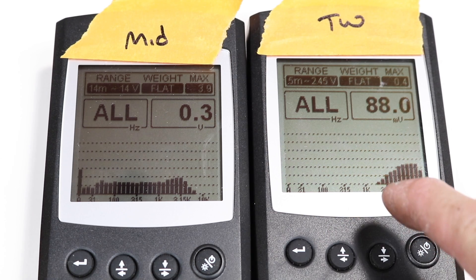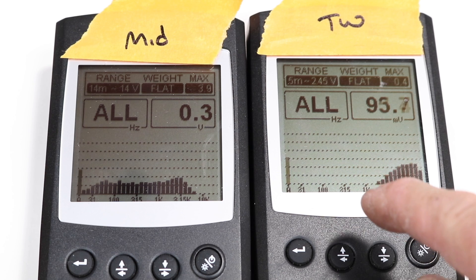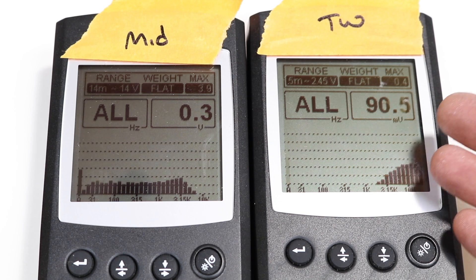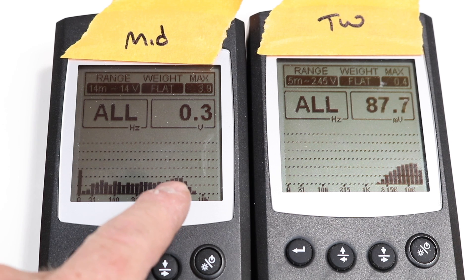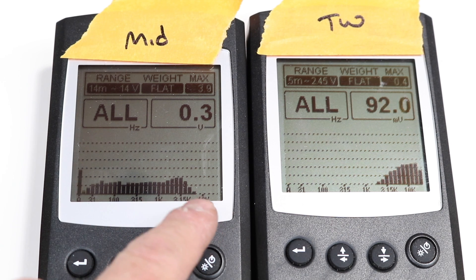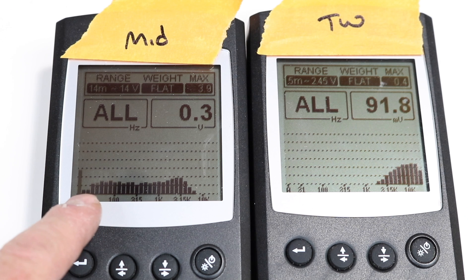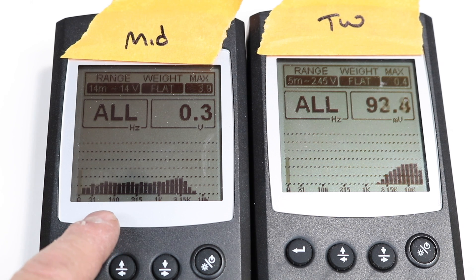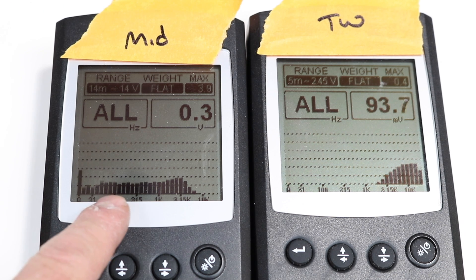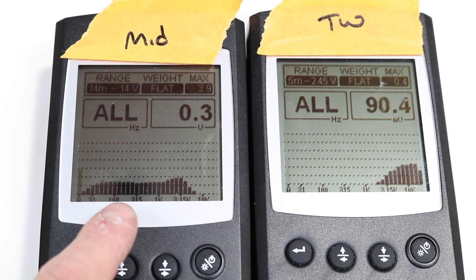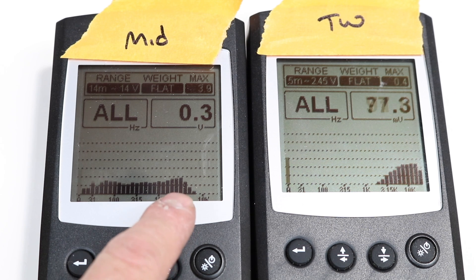So now we can see what is happening through the midrange and through the tweeter. The tweeter is clearly playing just a high pass as you think it would be because it's a tweeter. Over here, you'll notice the midrange is rolling off to not play tweeter frequencies. But one thing you'll also notice is down here,